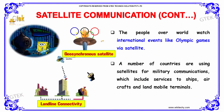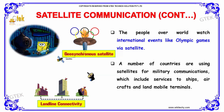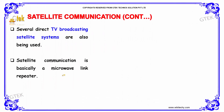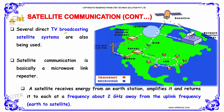People all over the world watch international events like the Olympic Games via satellites. A number of countries are using satellites for military communications, which include services to ships, aircraft, and land mobile terminals. Several direct TV broadcasting satellite systems are also being used.